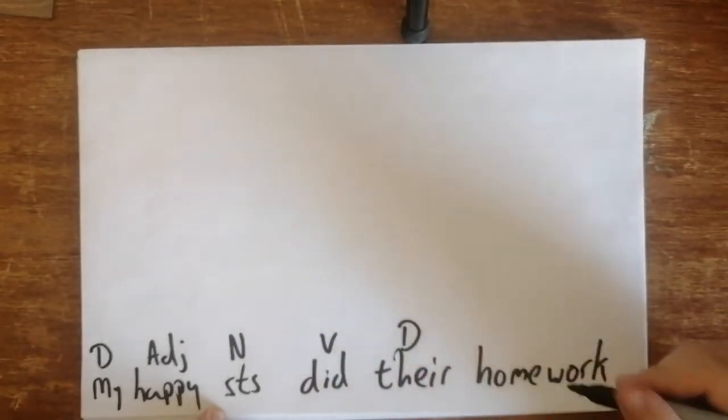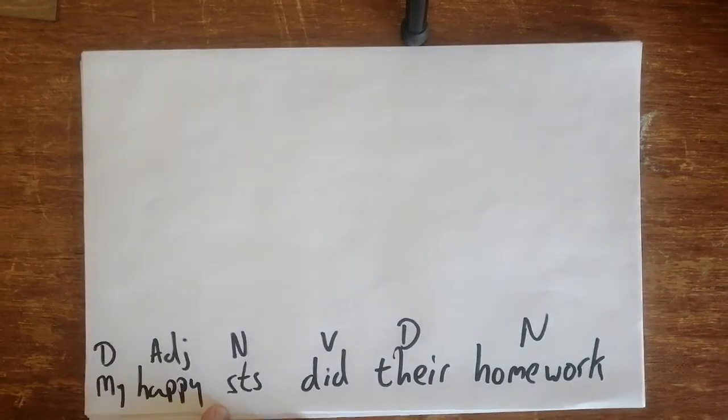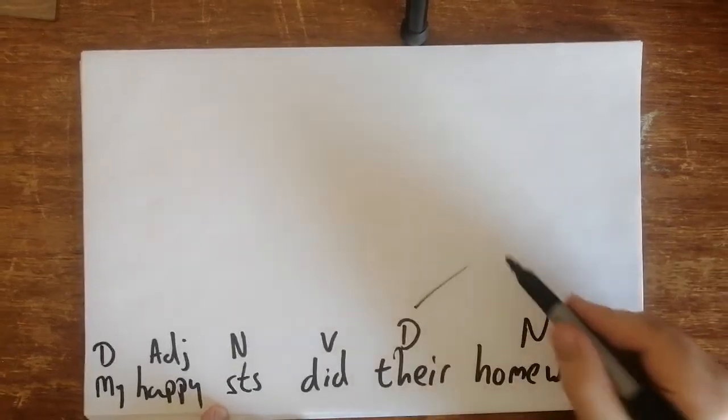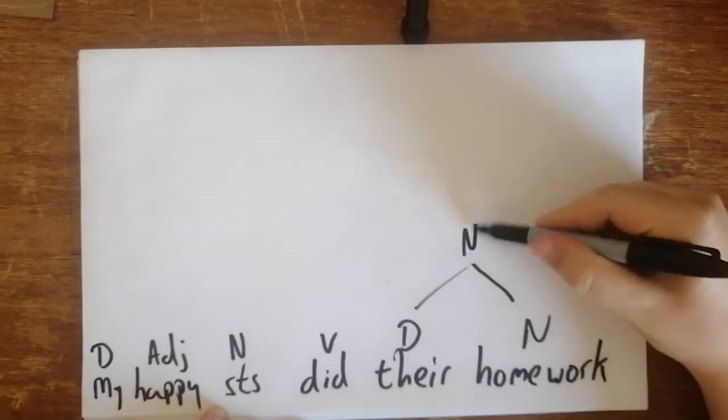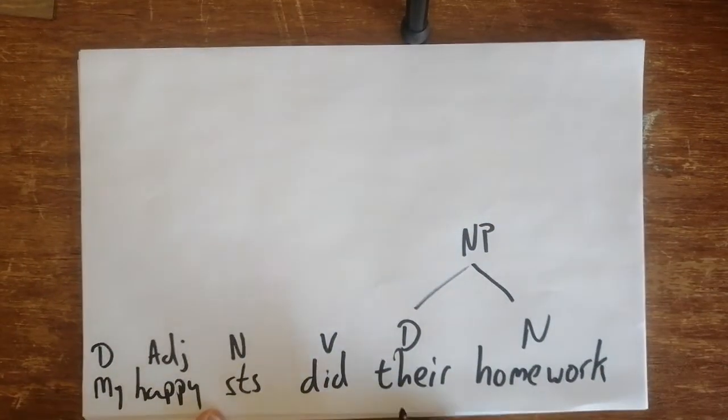Okay, so let's do the easy things first. We've got 'their homework', so that's clearly a noun phrase. And then we've got 'my happy students', and this time I've made it deliberately a little bit more difficult.